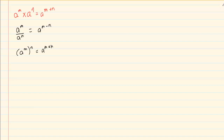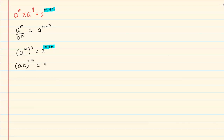Notice the difference between when we add the powers and when we multiply the powers. Then we have (ab) to the power of m, which becomes a to the power of m times b to the power of m. Remember that the m goes to every term in the bracket.